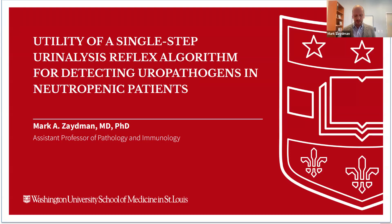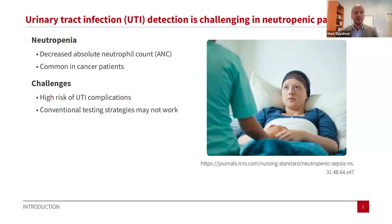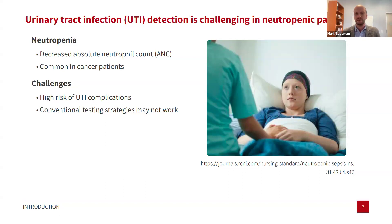I'm going to present a research project we've been working on. The title of my presentation is: Utility of a Single-Step Reflex Urinalysis Reflex Algorithm for Detecting Uropathogens in Neutropenic Patients. Urinary tract infection detection is challenging in neutropenic patients. Neutropenia is a condition characterized by a decreased absolute neutrophil count, and it's very common in cancer patients. These patients are at very high risk of complications of urinary tract infections, including pyelonephritis and urosepsis. Our conventional testing strategies may not work very well for this population.